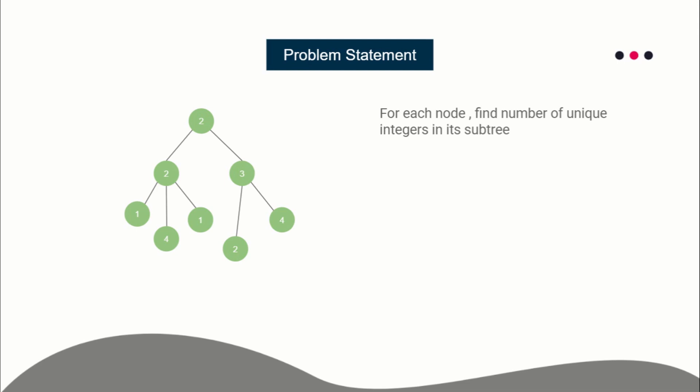The problem statement is simple: you are given a tree and each node of the tree has a certain integer. For each node you have to find the total number of unique integers in its subtree. For example, for this node the total number of unique integers in its subtree would be three, and for this node it would be three as well, and for this node there will be only one unique integer.